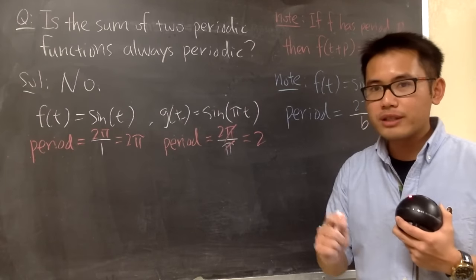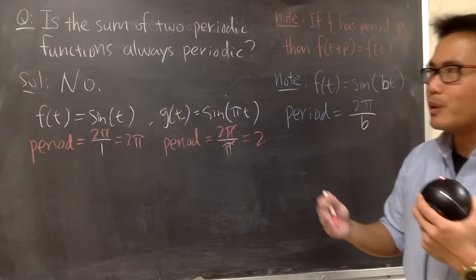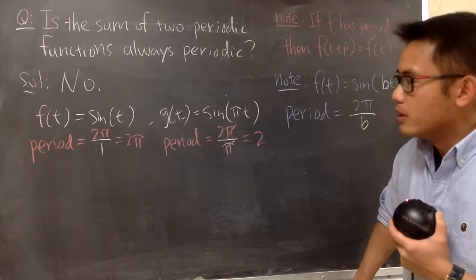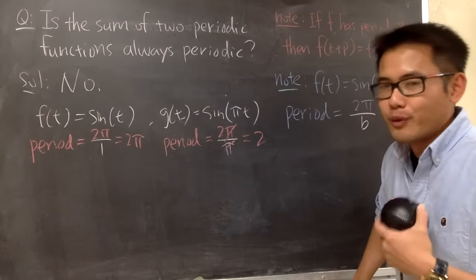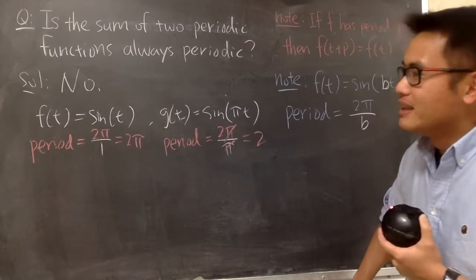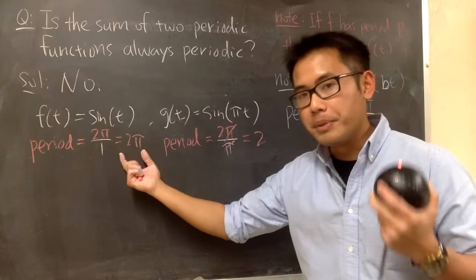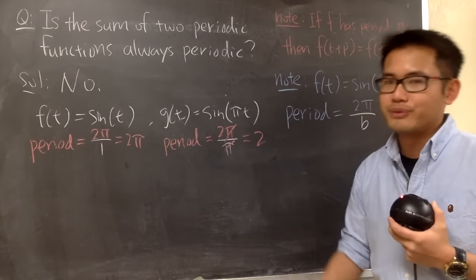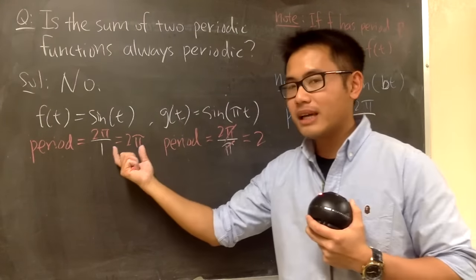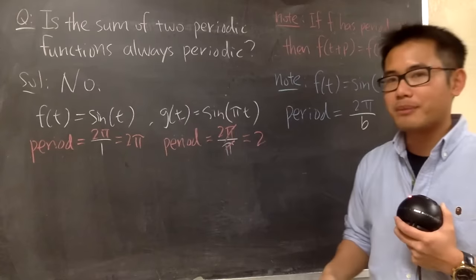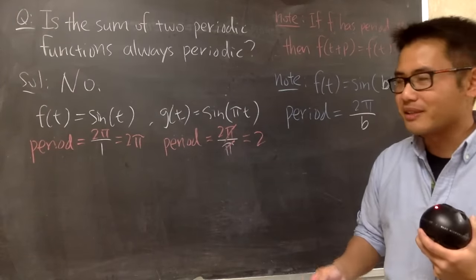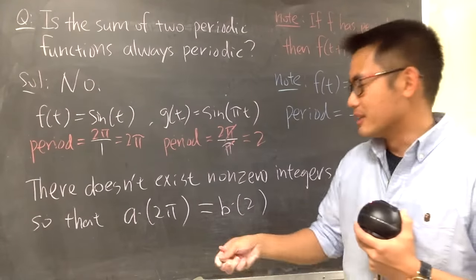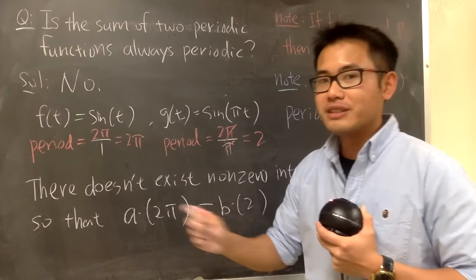Now, here is the question that you have to ask yourself. This is how you deal with the sum of two periodic functions. Is it possible to find two integers? Of course, non-zero. So that you multiply the first integer with 2π, and that will be the same as the second integer times 2. It's not possible, because the first one has the π. The other one doesn't have the π. So integers are not enough. So here's the deal. If this is not possible, then that means the sum of these two functions is not periodic.